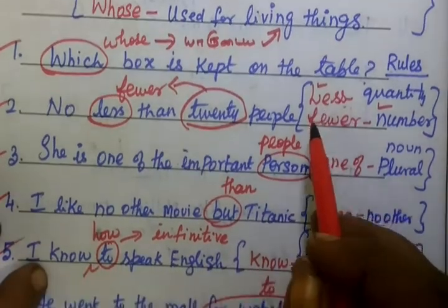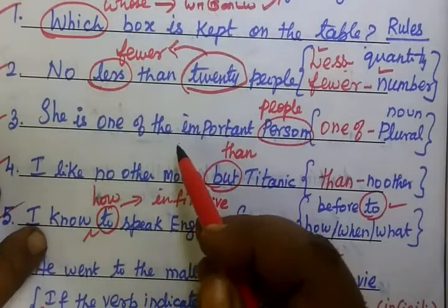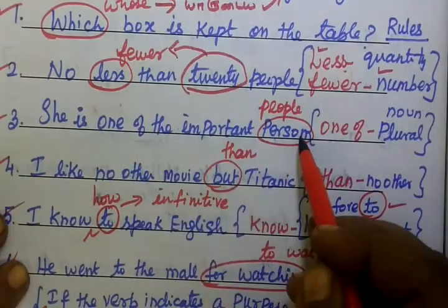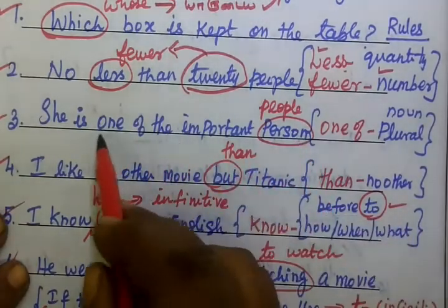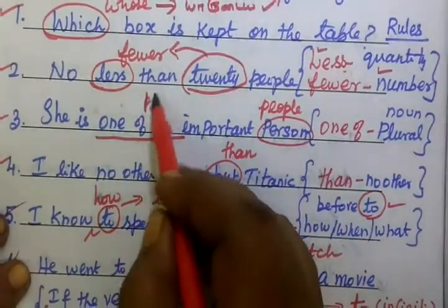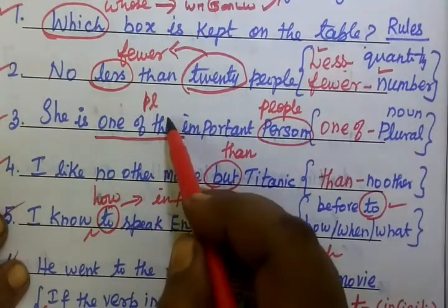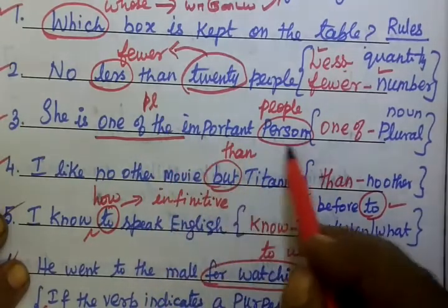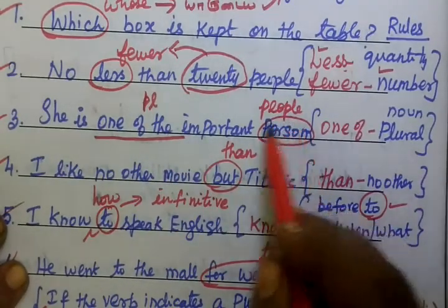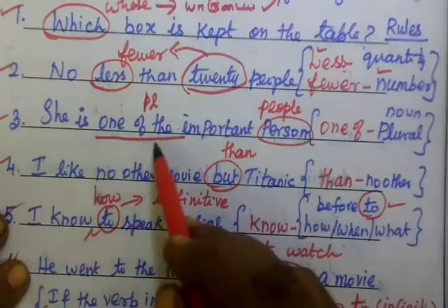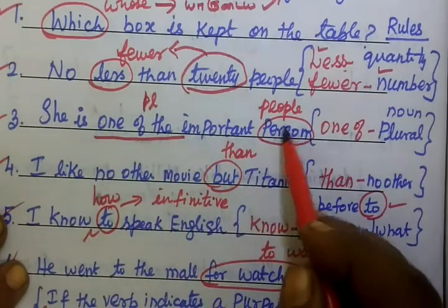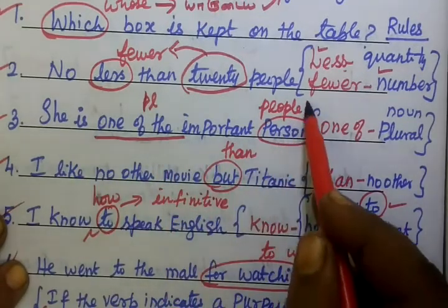See the third one: 'She is one of the important person' is incorrect. With 'one of the', we have to come to the plural form. So the correct form is: she is one of the important people.